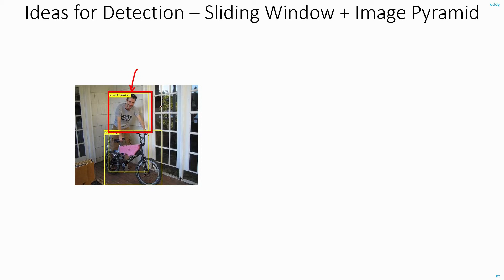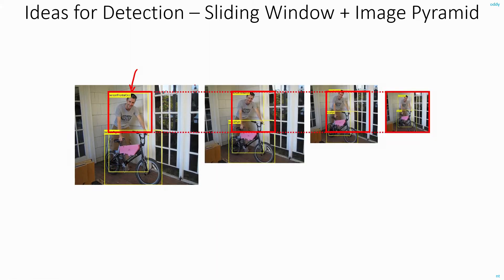For this, I can use the concept of an image pyramid. What I'll do is resize — that is, scale down — the image and try the same sliding window. Even in that case, if the person doesn't fit, I'll resize the image again and try the same sliding window. At some scale, we can see that the person fits perfectly inside the window and gets detected. Maybe the bicycle gets detected at a different scale. This way, using an image pyramid of different scales, we can expect that different sized objects will get detected at different scales.